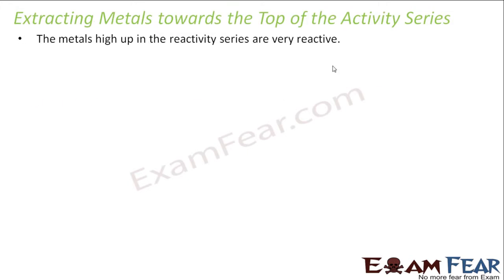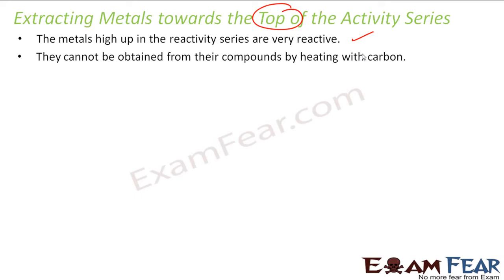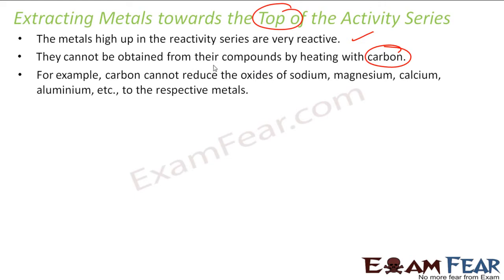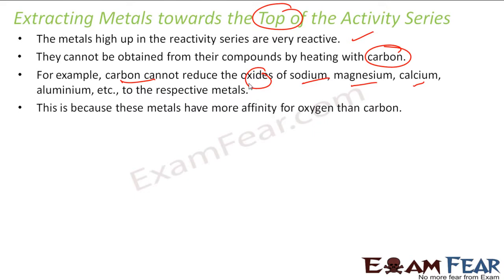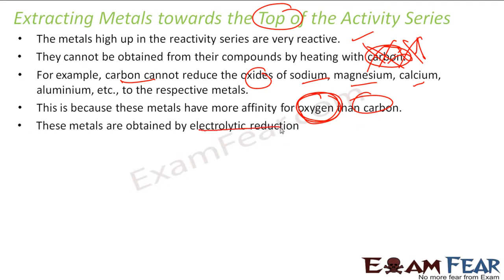For highly reactive metals at the top of the activity series, they cannot be obtained by heating with carbon. Why? Because carbon will not be able to reduce the oxides of sodium, manganese, and calcium, since these metals have more affinity towards oxygen than carbon. That is why we cannot use carbon for these metals. That is why we use electrolytic reduction.